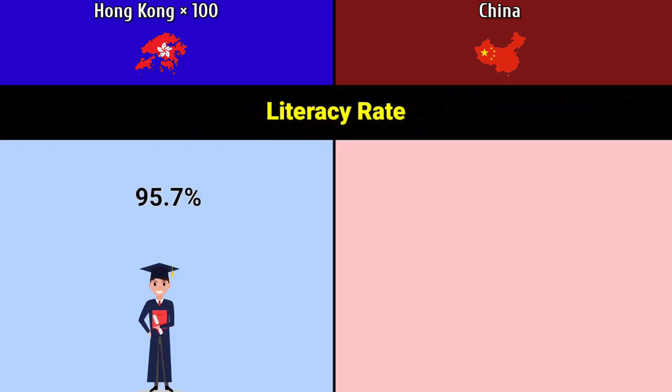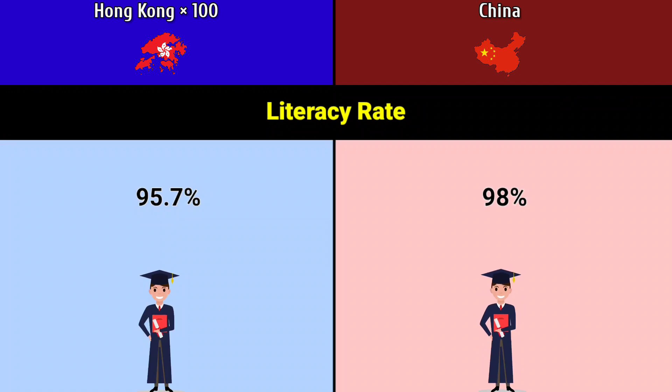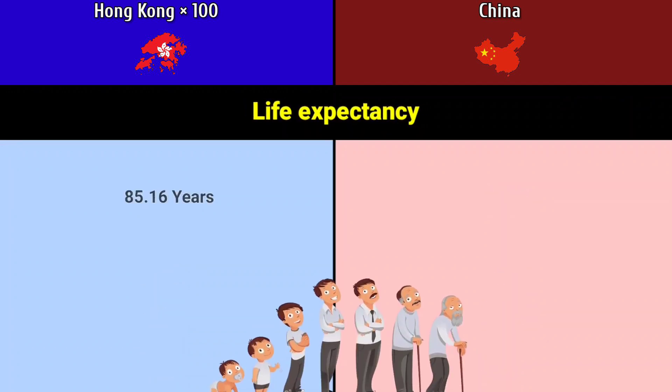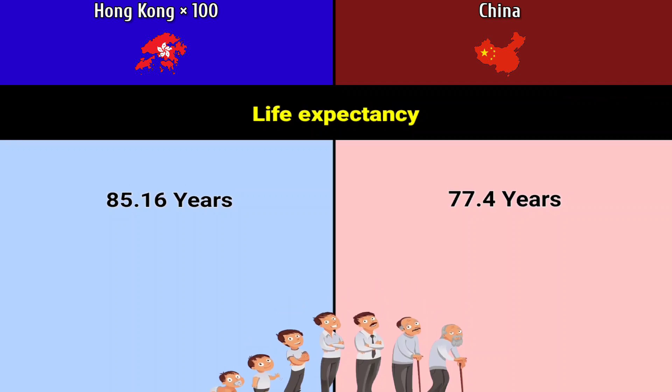Literacy rate: Hong Kong 95.7%, China 98%. Life expectancy: Hong Kong 85.16 years, China 77.4 years.